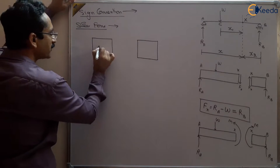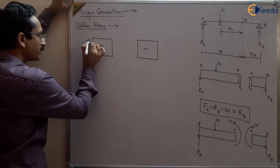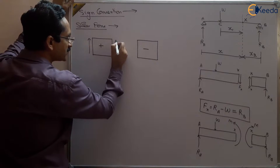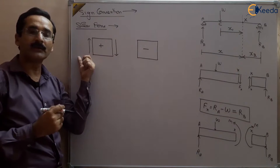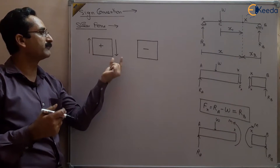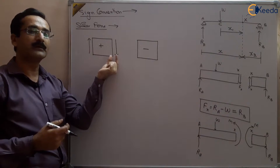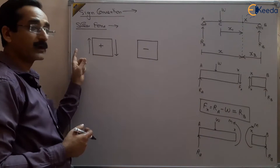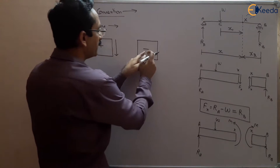Whatever sign convention you choose, we are taking this type: positive is when the leftward forces are upward or forces to the right of the cross section are downward. If you are taking any force to the left of the cross section as upward, it will be positive. If taking a force in the rightward direction as downward, that force will also be taken as positive. So either leftward upward positive or rightward downward positive. The reverse will be the case for negative shear force.